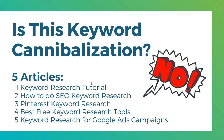The answer is no. You're actually helping yourself by writing articles about different topics and subtopics. The keyword research tutorial is about the main topic, and all the others are subtopics — SEO, Pinterest, free keyword research tools, and Google Ads. You can link these individual subtopics back to your main topic page. What you don't want to do is write about SEO keyword research five different ways — you want to keep it all in one article, one page per topic or subtopic.